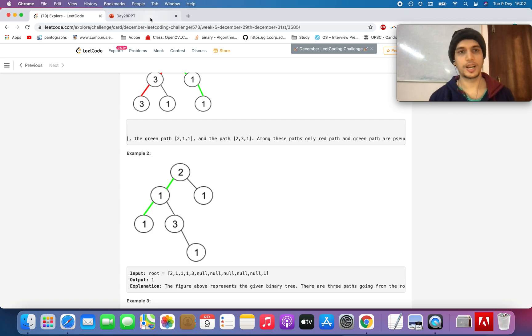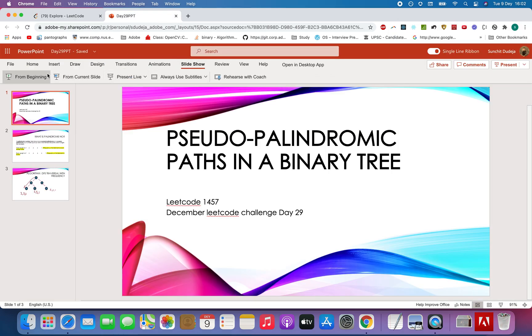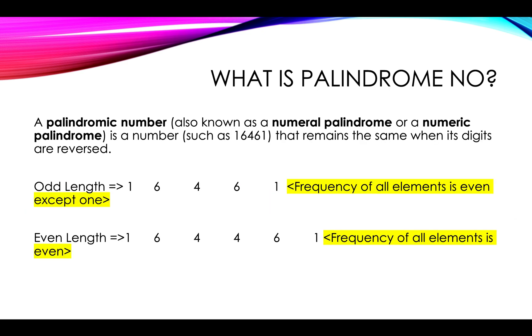So let's quickly look at the algorithm that I have devised. Starting from the beginning, what is a palindromic number? Let's go to the basics and define what is a palindromic number. A palindromic number is a number that remains the same when its digits are reversed.